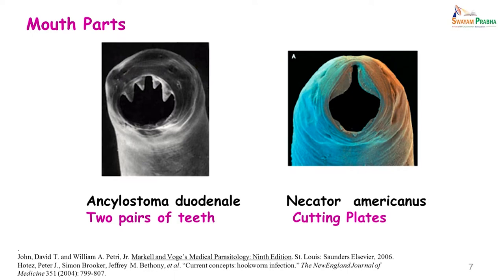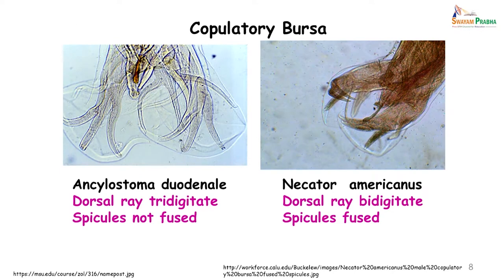The worms can further be differentiated based on their mouth parts. Ankylostoma duodenale has 2 pairs of teeth, and Necator americanus shows cutting plates — it is with the help of these that they attach to the mucosa of the small intestine and suck blood. The copulatory bursa also helps differentiate the adult worms. In Ankylostoma duodenale the dorsal ray is tridigitate and the spicules are not fused, whereas in Necator americanus the dorsal ray is bidigitate and the spicules are fused.